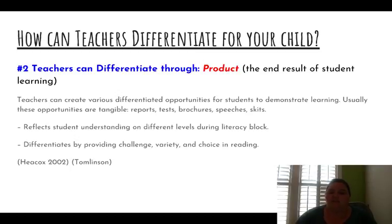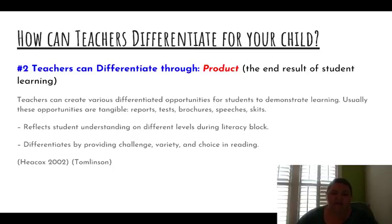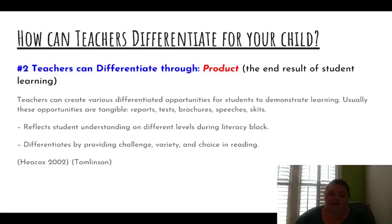The third way teachers can differentiate is through product — the end result of student learning. We're used to seeing tangible ways for students to express what they've learned, and that's usually through tests. But there are other ways through what we call performance tasks. You may see students do a report, make a brochure, give a speech, do a skit, or complete various tasks. Differentiation allows your child's teacher to create an opportunity for your student to complete any kind of product to display their learning, because not all students are test takers. Teachers can create assessments that truly reflect how your student is learning in ways beyond a test. It gives them opportunities to challenge students, provide variety and choice — all in the reading block, which is crucial to creating well-rounded readers.